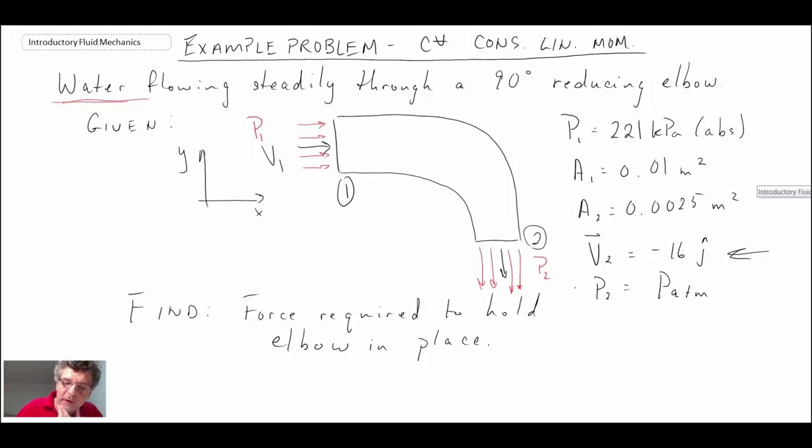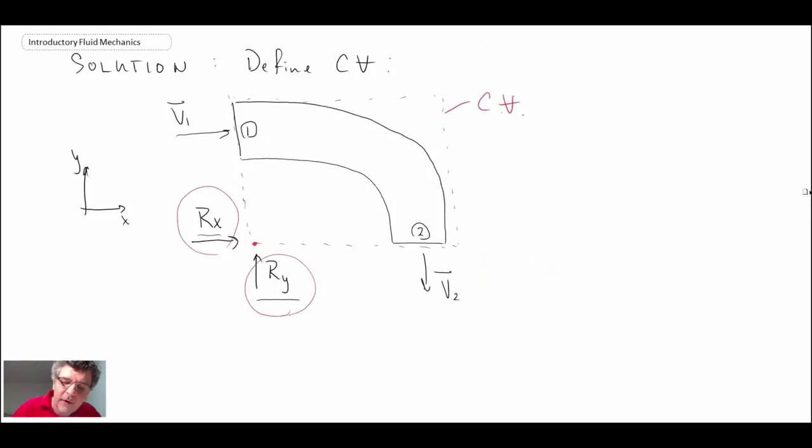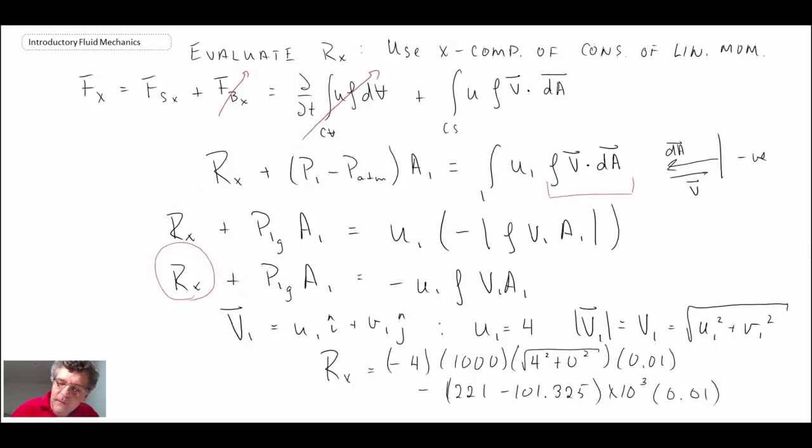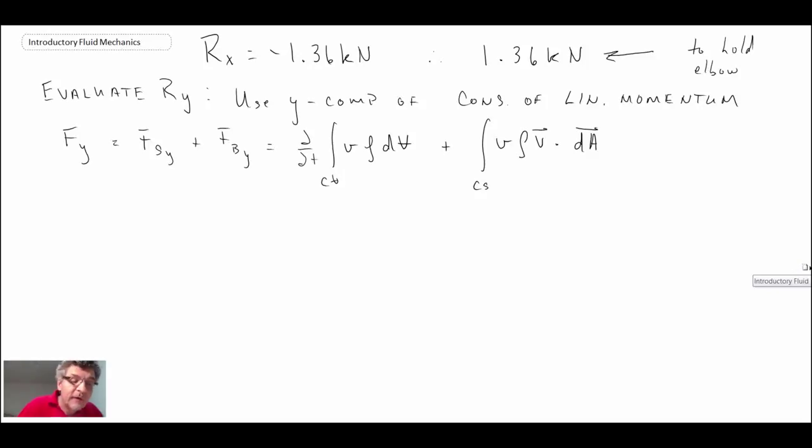For the y component, what we were told is p2 is atmospheric pressure. And up here on the other side of the elbow, this is atmospheric as well. So if we look at our free body diagram, we have p atmosphere all around. p atmosphere here, with the exception of control surface one, we had a higher pressure there. That was p1. And then down here, it's p atmosphere. Consequently, there is no force in the y direction due to pressure. And the net result of that is the first term here. We can say p atmosphere balances.